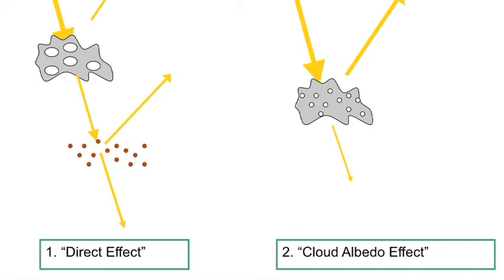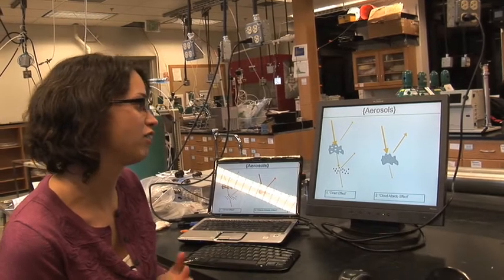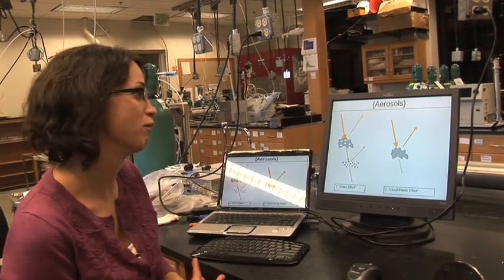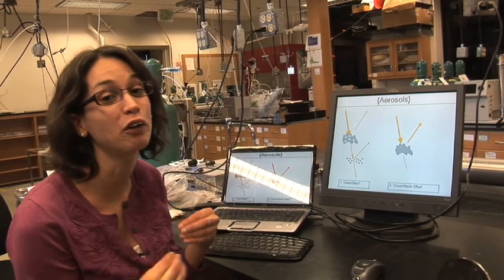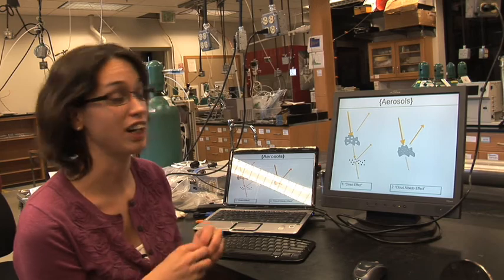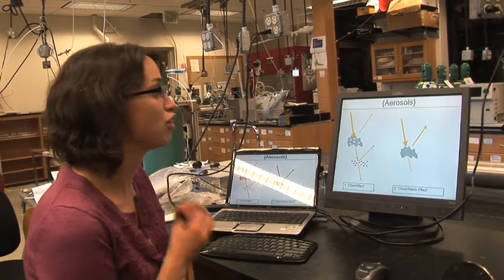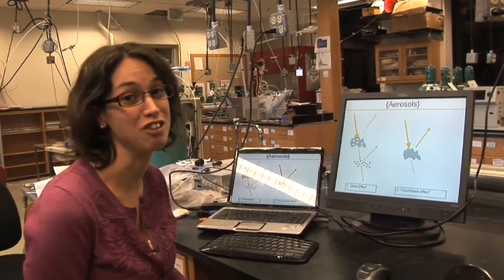The problem is that if you put particles in that cloud, the water droplets that you make are smaller and you'll have a lot more of them. This means that a pollution-affected or particle-affected cloud is much more reflective than a natural cloud, so the cloud will have more light bounce off the top of it. We call this the cloud albedo effect or the indirect effect.